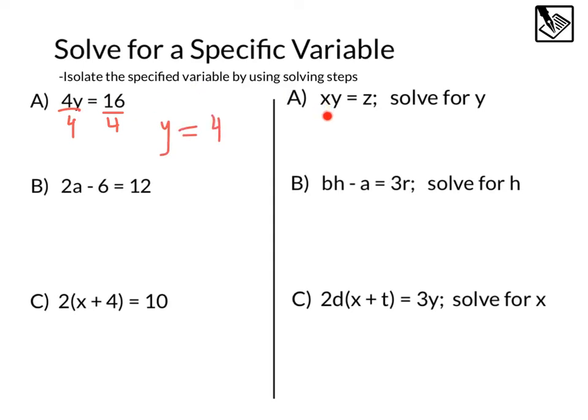Let's look at this sample A over here. Here we have, instead of 4 times y, x times y equals z. Well since x is being multiplied, we can do that same step. Instead of divide by 4, we're going to divide by x, and then our answer is just going to be y equals z over x.